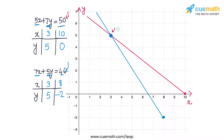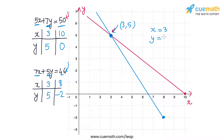We can see that both lines intersect at the point (3,5). So (3,5) is the solution of this pair of equations, meaning x equals 3 and y equals 5. The cost of one pencil is 3 rupees and the cost of one pen is 5 rupees.